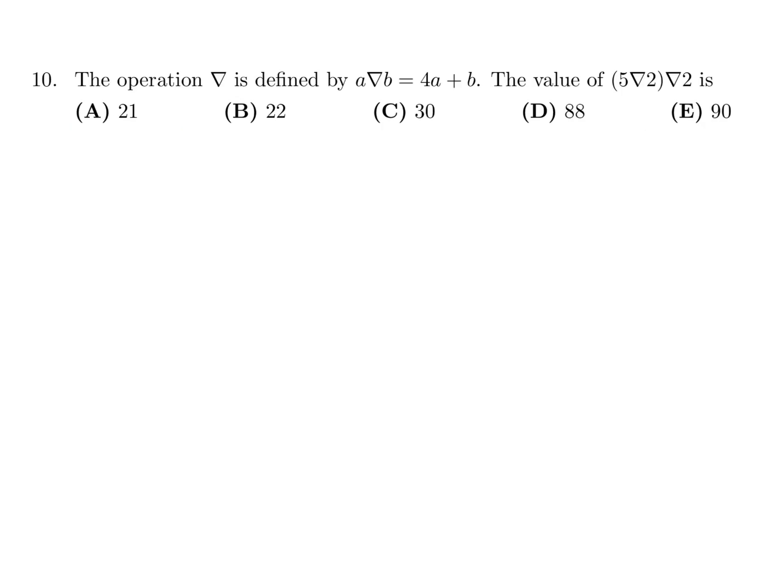The operation symbol is defined as a symbol b is 4a plus b. What is the value of 5 symbol 2 symbol 2? First, let's just do 5 symbol 2. According to that operation it would be 4 times 5 plus 2, which is 22. And then therefore, 22 symbol 2 is what we'll calculate next, and that would be 4 times 22 plus 2, which is 88 plus 2, which is 90. And therefore number 10 the answer is A.